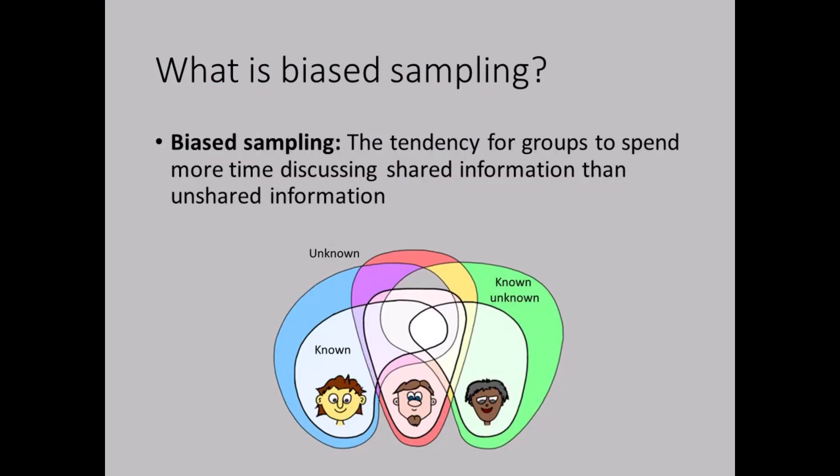The final process loss concept we'll cover is biased sampling. Communication and the sharing of information are crucial to group operations, but members rarely have all the information they need. Some members know about one aspect of the decision, while others know about a different aspect, and none of them realize they know something the others don't, or that they're missing information. Biased sampling is the tendency for groups to spend more time discussing information that has already been shared than information that isn't known to everyone. This lack of information hinders their ability to make sound decisions. This process also contributed to both space shuttle explosions — the Challenger and the Columbia. Engineers had access to information that top executives did not, and vice versa, and the lack of information sharing resulted in human errors that proved fatal for the astronauts on board.